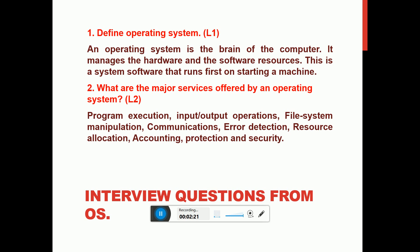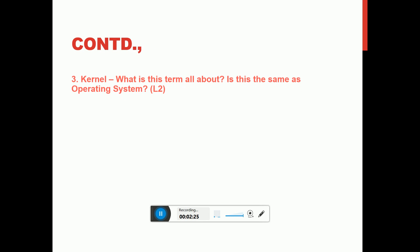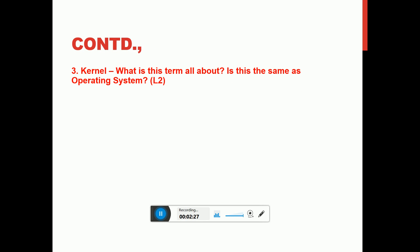Security—it is taking care of the password, it is taking care of access permissions. All these things are taken care of with operating systems. So operating system is an effective and efficient resource manager. Kernel—what is the term all about? Is it the same as operating system? Yes, please understand that kernel is the very important part of any operating system.